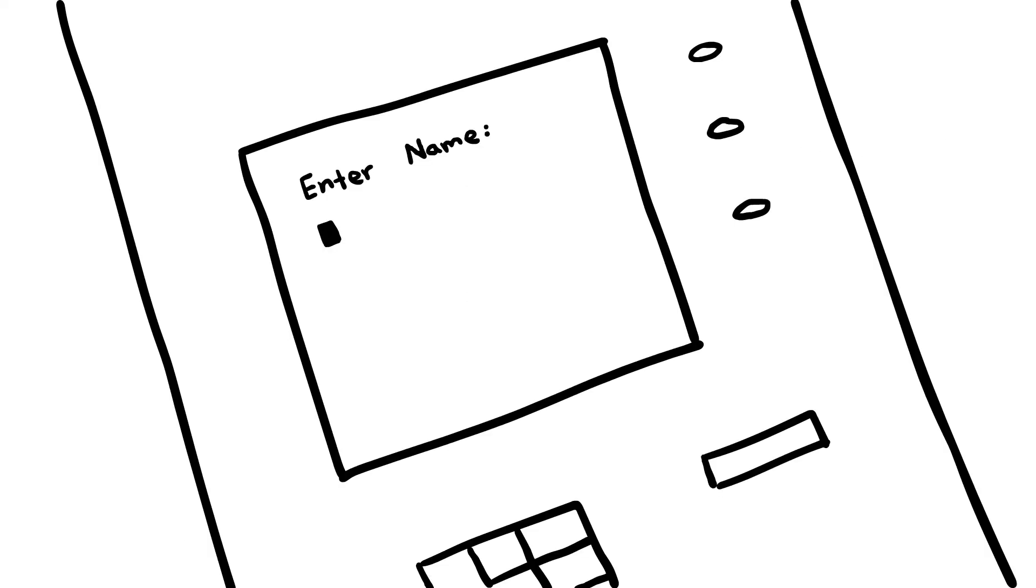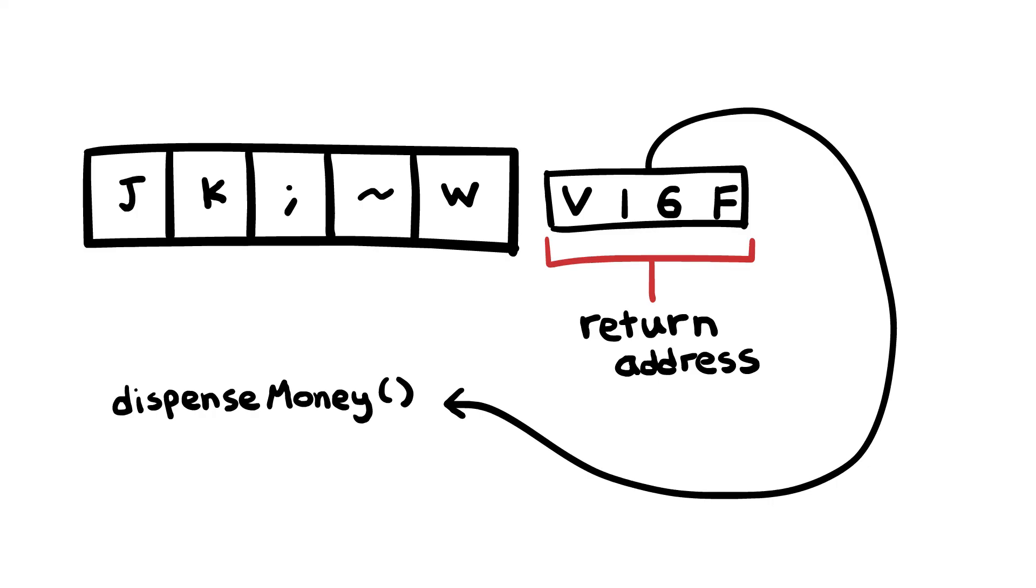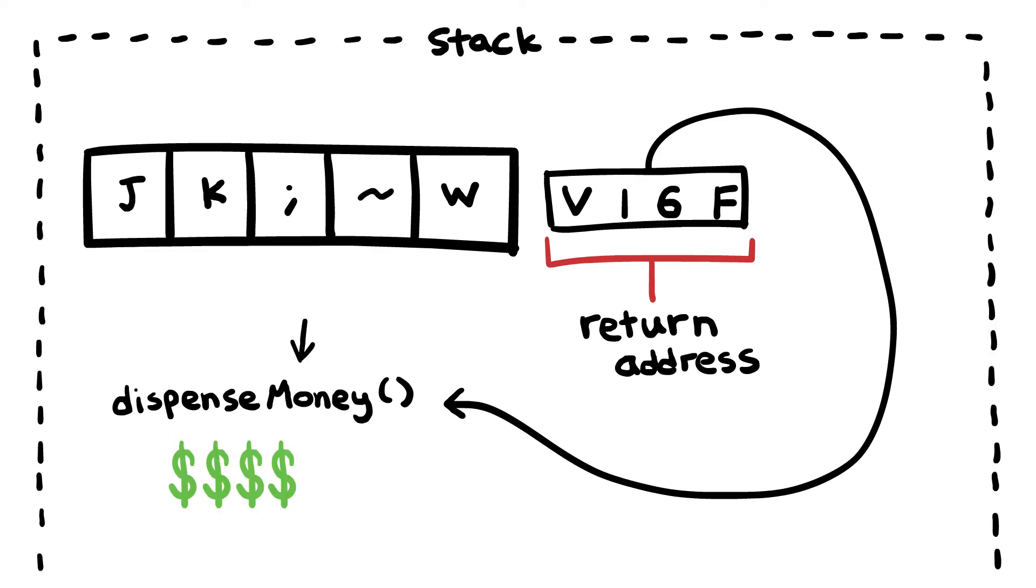If there's a buffer overflow in the ATM when it prompts us to type in our name, if we type in just the right name, we can overwrite the return address of the get name function with the address of the dispense money function. So when the ATM is done getting our name, the computer will look at the stack and start executing the dispense money function, and we get wildly rich.